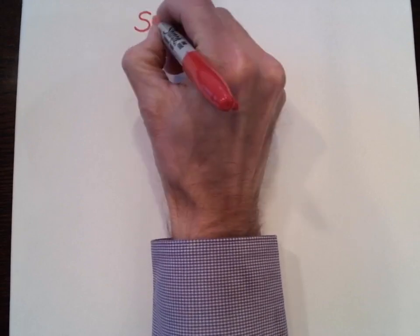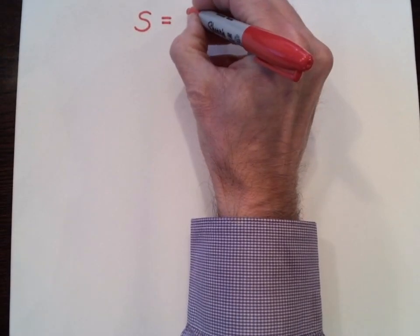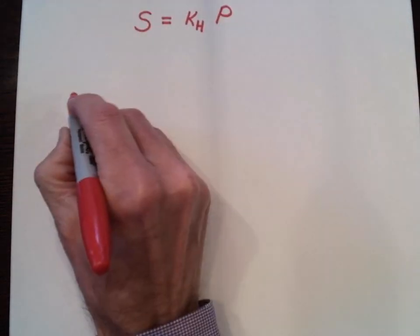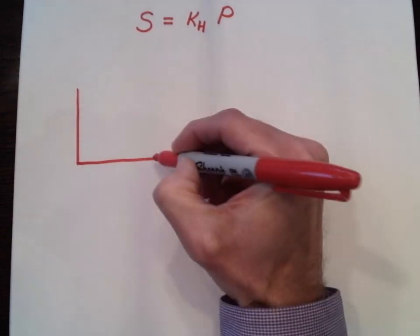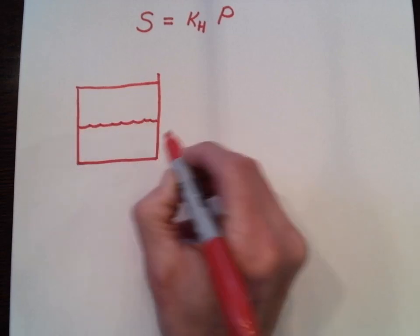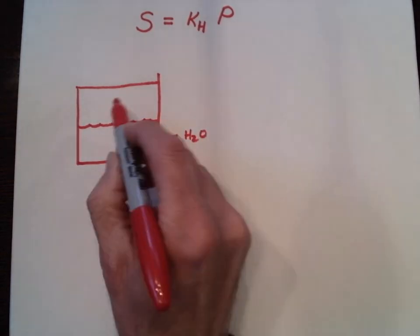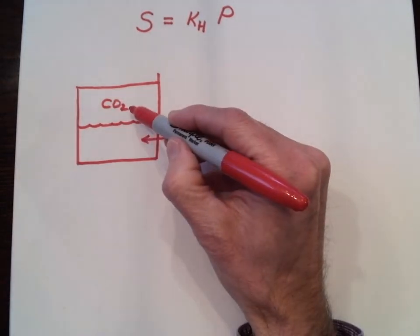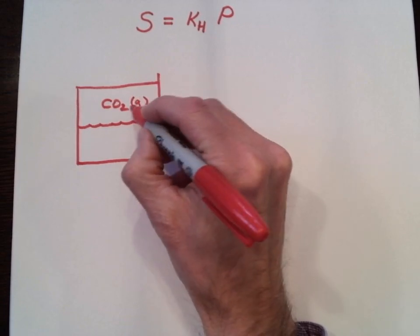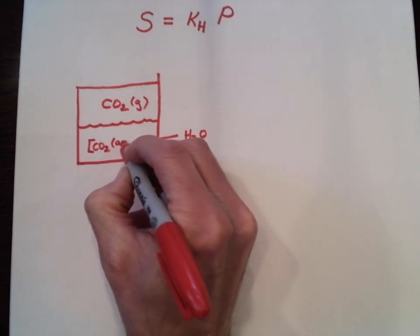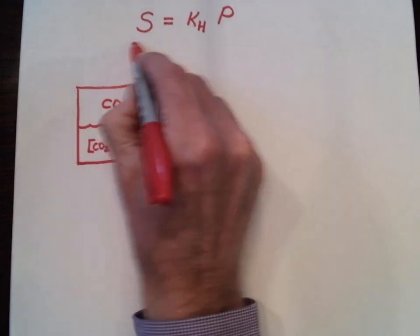We're going to discuss Henry's Law, which says that the solubility of a gas in a fluid is going to be equal to some constant — the Henry's Law constant — times the pressure of the gas over the solution. Imagine a sealed container with a fluid, usually water, and a gas in the headspace — say CO₂. This could be like a bottle of soda pop. As you increase the pressure of the CO₂ gas in the headspace, the concentration of carbon dioxide dissolved in the aqueous phase increases. That's all that equation says.